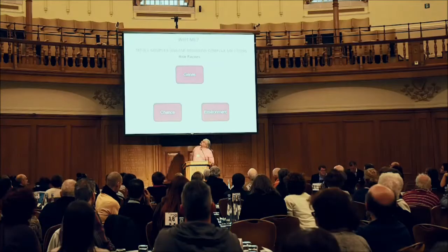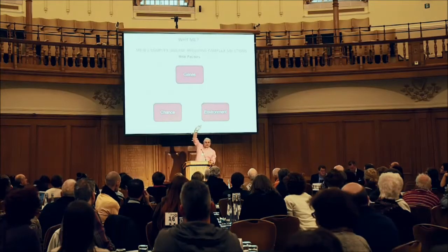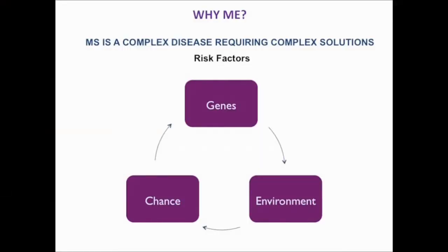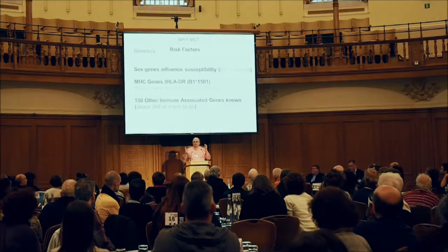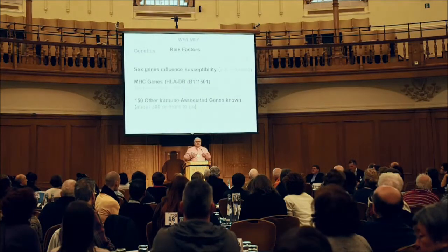One of the questions you will ask is 'why me?' It's a complex interaction: there's a genetic component, an environmental factor, and there's the unknown — chance. One of the genes that affects multiple sclerosis is the sex chromosomes. There are more females with MS than males — in the UK it's about two to one, and in Iran it's six females to every one male.